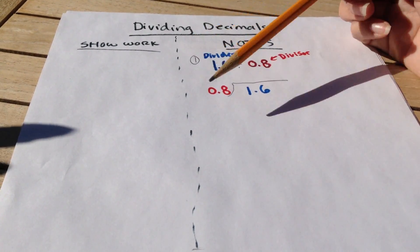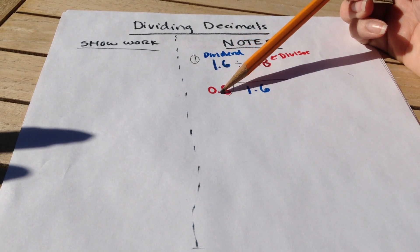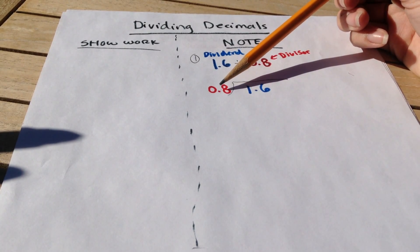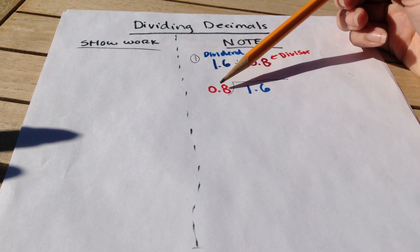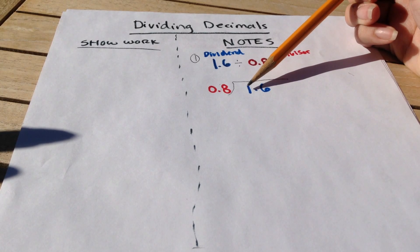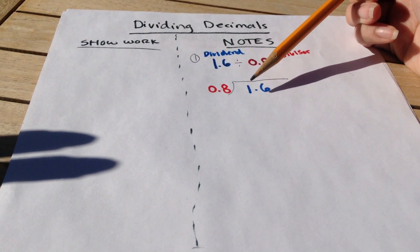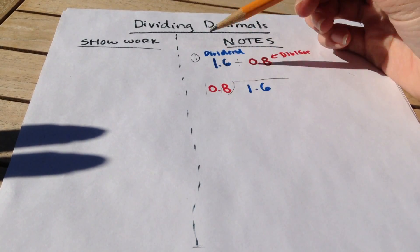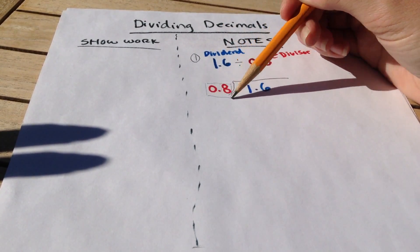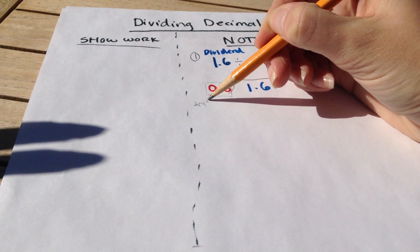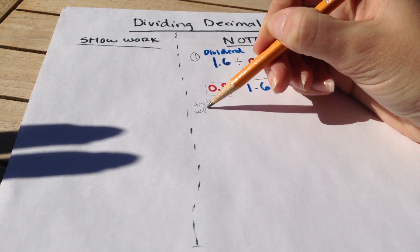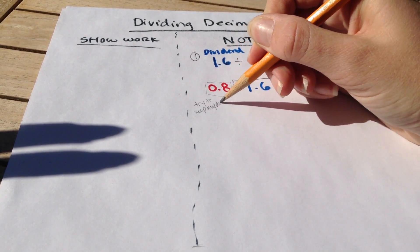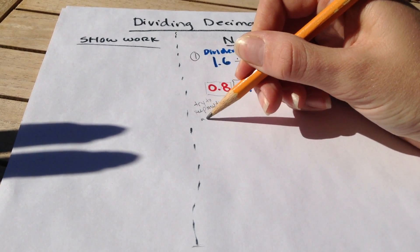Now, the difficulty with dividing decimals is that we have a decimal on the outside, and then we're dividing it by another decimal on the inside. I don't exactly know off the top of my head how many times eight tenths goes into one and six tenths, but there is a skill that I can use in order to help myself be able to divide these two numbers. And it has to do with the divisor. I want to try to get my divisor to become a whole number.